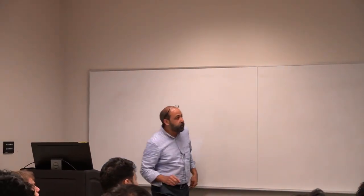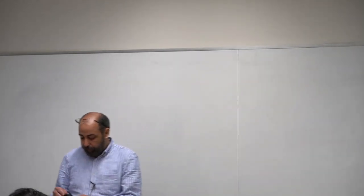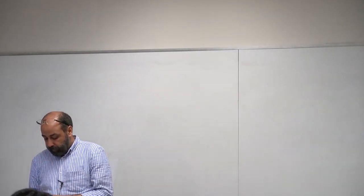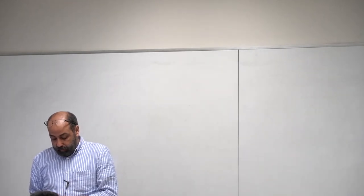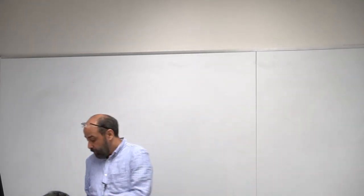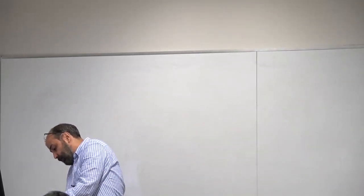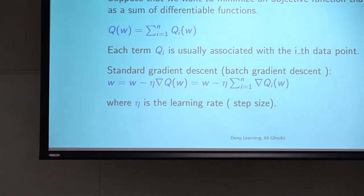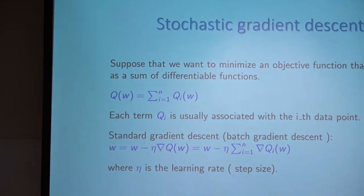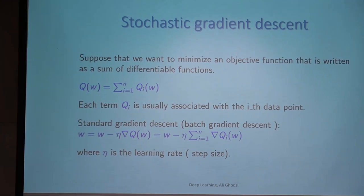In practice we actually use stochastic gradient descent, which is slightly different from gradient descent and it's more efficient. So what's the difference between gradient descent and stochastic gradient descent?